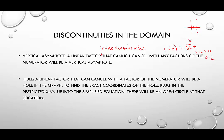The other thing that a discontinuity could be is a hole. A hole is literally an open circle. We've seen holes before — if you've ever looked at absolute value inequalities, you use a hole to represent when the start of the solutions is not included. A linear factor that can cancel with a factor of the numerator will be a hole in the graph. To find the exact coordinates of the hole, we plug in the restricted x value into the simplified equation.